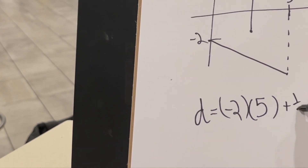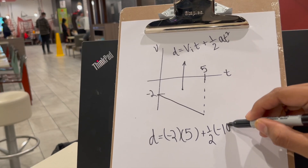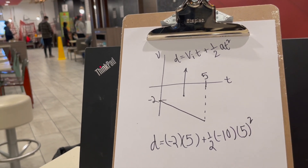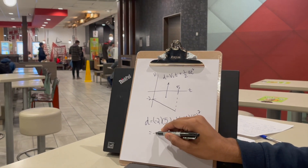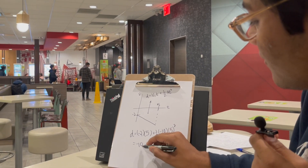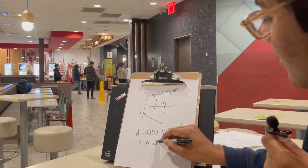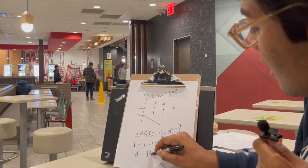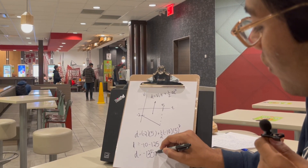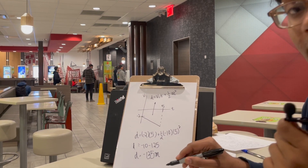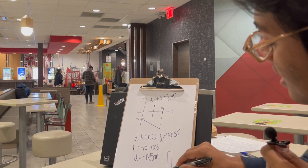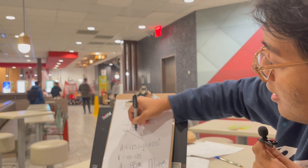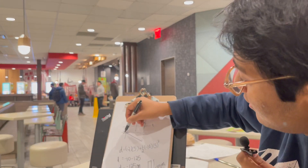So D equals V_i times T plus half g T squared. That gives minus 10 plus half times 10 times 5 squared, which is minus 125. So the total distance the ball travels is 135 meters, meaning the building it was dropped from is 135 meters high. Now let's see if the area under the graph matches.